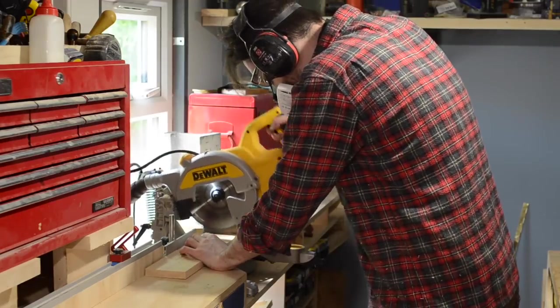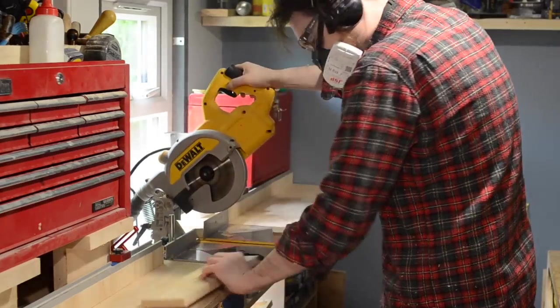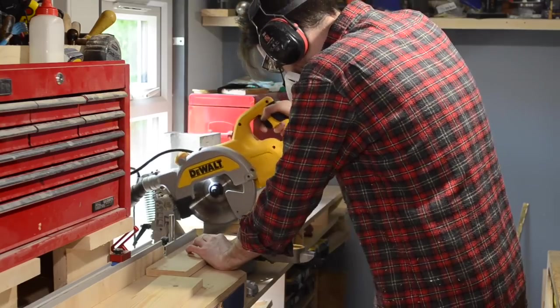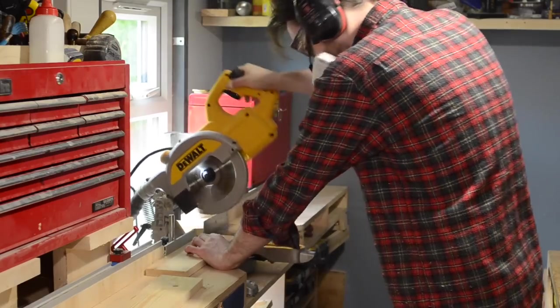So the first job is to get the box built. I've got these bits of material that are about 100mm wide and they're going to be perfect, so all I need to do is cut four bits down to the correct length.